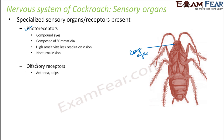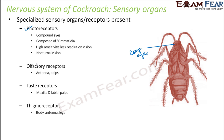Olfactory receptors — receptors of smell — work with the help of antennae and palps. Taste receptors are present in the maxilla and labial palps, which are different mouth parts we spoke about. Thigmoreceptors are receptors to touch — their entire body, antennae, and legs can feel touch. That is why even if you touch the antenna of the cockroach, it will reciprocate — it can feel that touch.